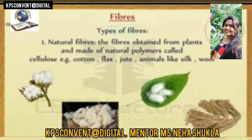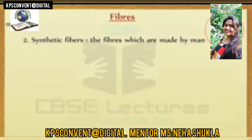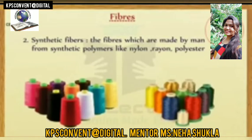Examples include cotton, flax, and jute. There is another type of natural fiber — animal fibers — which are obtained from animals, like silk and wool. Synthetic fibers are the fibers which are made by man from synthetic polymer, like nylon, rayon, and polyester.